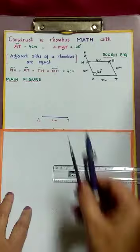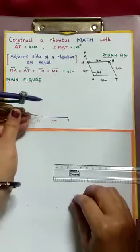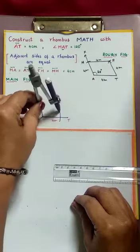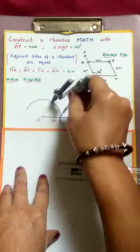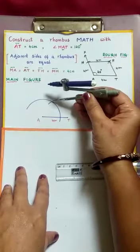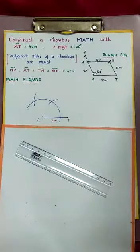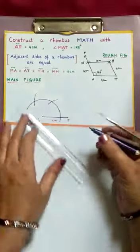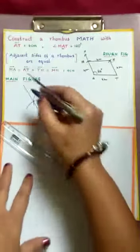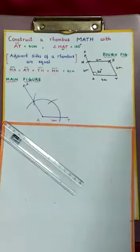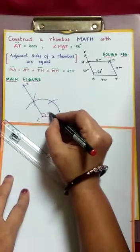Now, how to construct 120 degrees at A. Take some convenient radius, placing A as center, draw an arc. Don't disturb the radius. Where this arc intersects, from there draw one arc which gives 60 degrees. Again, with the same radius where this arc intersects, draw another arc. Join this — this is your 120 degrees. Name it: angle XAT is 120 degrees.